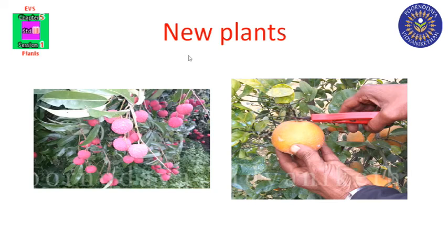Next we can learn about new plants. Many plants were not grown in India earlier — they have been brought from other countries. Lychee has come from China, and keno has come from California.